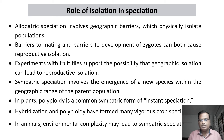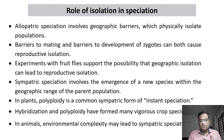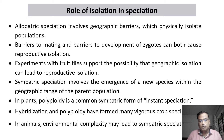Experiments with fruit flies support the possibility that geographic isolation can lead to reproductive isolation. There is one experiment conducted on fruit flies which suggested that geographical isolation can lead to reproductive isolation. When two populations are separated geographically for a long time, they also get separated reproductively. Ultimately, it is reproductive isolation that divides a population into two different species, so geographical separation is the initial cause.